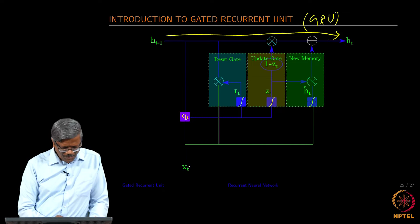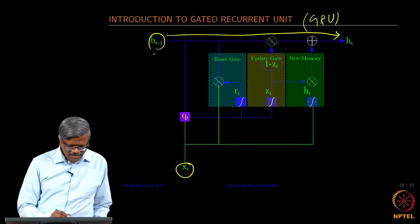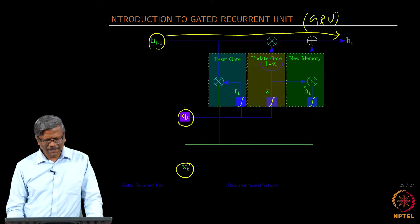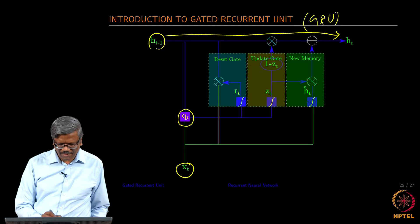Here we have an input, then we combine the h_(t-1) and x_t here, then call it as q_t, and then q_t is connected to a sigmoidal function and then we have a reset gate.